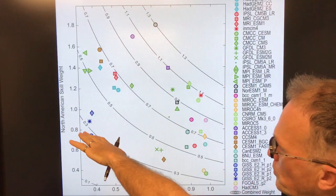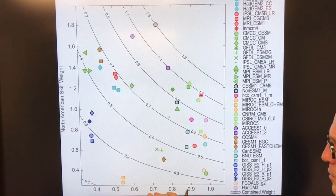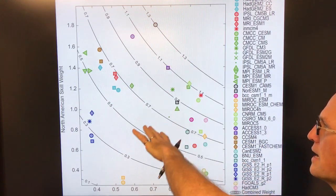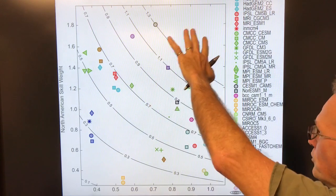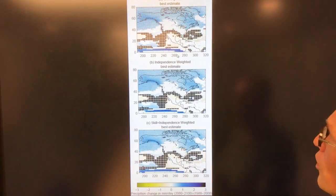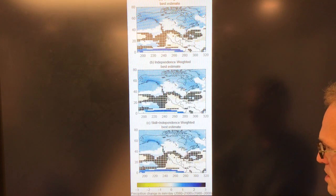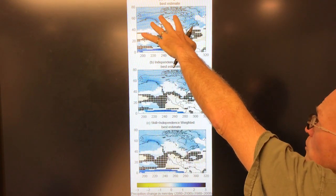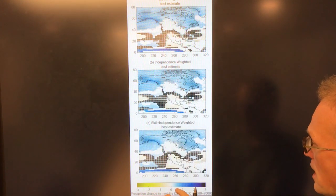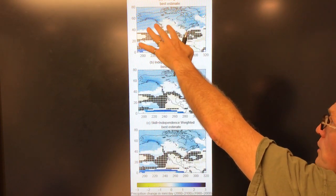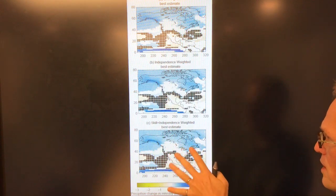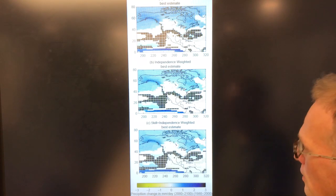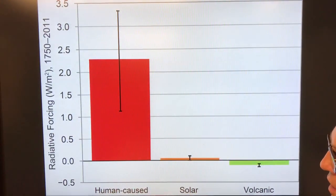If you multiply the North American skill weight by some independent skill weight, you get different curves, and the models can be more or less reliable — then you can weight them accordingly. For example, this shows precipitation change expected over North America towards 2100 versus the average from 1980 to 2000. White areas show very little change, blue areas show increased precipitation with good reliability, and the dark hash areas are where we can't determine a significant change.